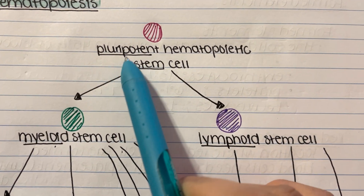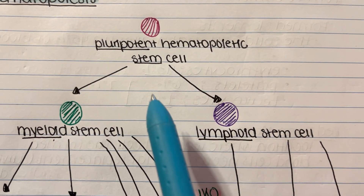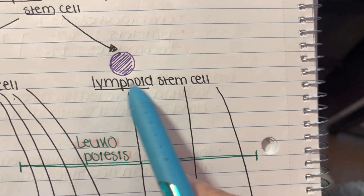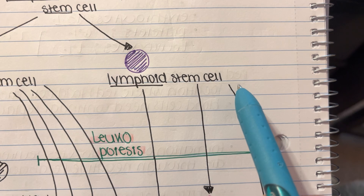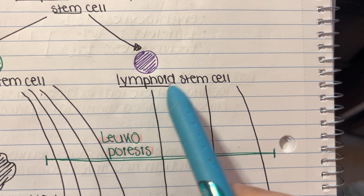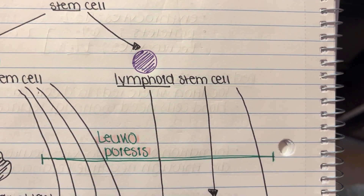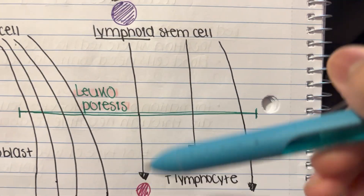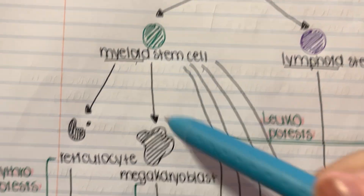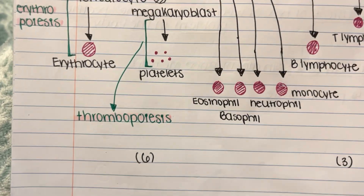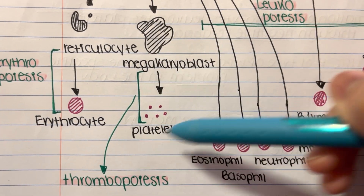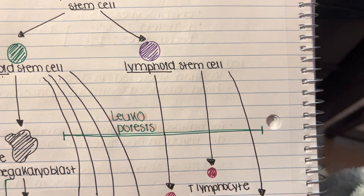Now for the lymphoid stem cell — a quick refresher: both myeloid and lymphoid come from the pluripotent hematopoietic stem cell. Fun fact: 'lymphoid' relates to white blood cells, so everything produced here is strictly white blood cells. That's different from myeloid, which had erythrocytes and platelets in addition to white blood cells.